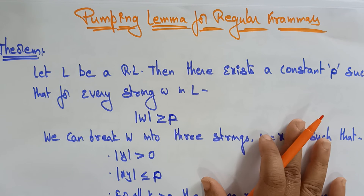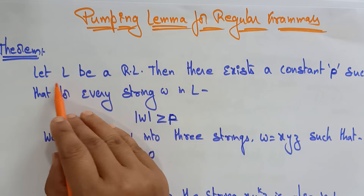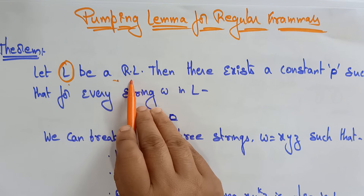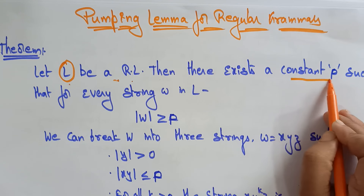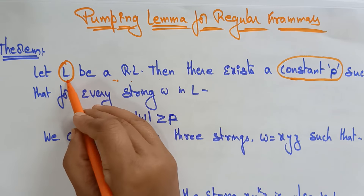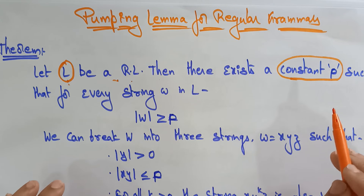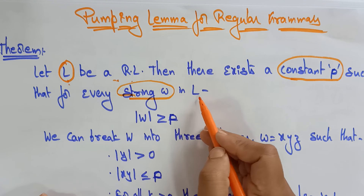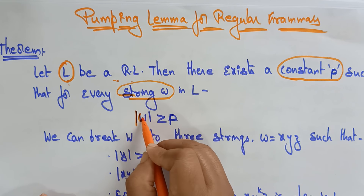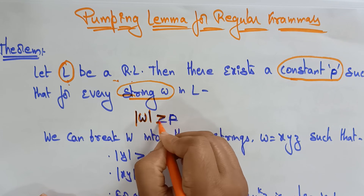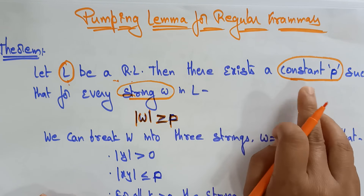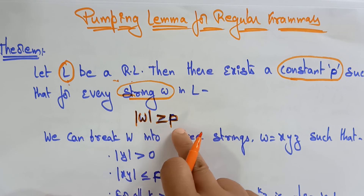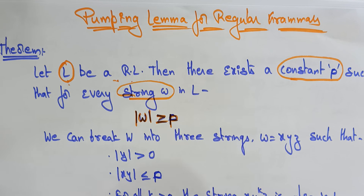So here there is a theorem. Let L be a regular language. Then there exists a constant P in this language L. That is the pumping lemma — I have taken one constant P such that for every string W in language L, the length of W, that is mod W, should be greater than or equal to this constant P.